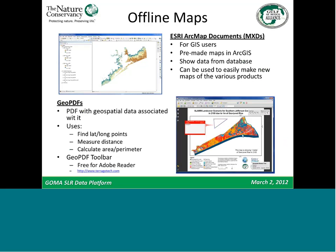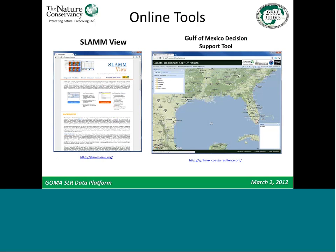For offline maps, users can view products through MXDs and geo-PDFs. Regarding geo-PDFs — shown here in Adobe Reader, which is free — if you want to access the spatial information saved within, you can upgrade to Adobe Acrobat Pro, or download a free toolbar at taragotech.com. Once you have that toolbar, you can zoom into maps within the PDF, find GPS lat-long coordinates, measure distances, and calculate perimeter and area, adding significant functionality. The online tools we'll show later are SLAMView and the Gulf of Mexico Decision Support Tool.